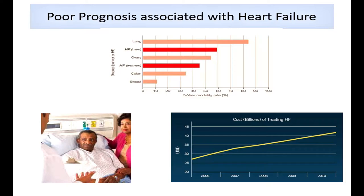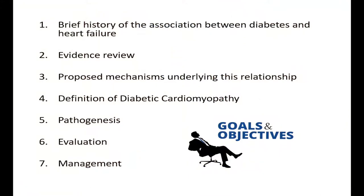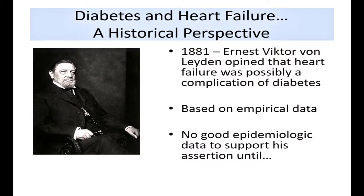My areas of focus are: briefly reviewing the history of the association between diabetes and heart failure, the historical context, the mechanisms, and a focus on diabetic cardiomyopathy — its pathogenesis, evaluation, and management. The link between diabetes and heart failure was first suggested by Ernest Victor von Leiden, a German professor of internal medicine, who opined on the basis of clinical experience that heart failure was potentially a complication of diabetes. This was empirical — he had no good epidemiologic data.